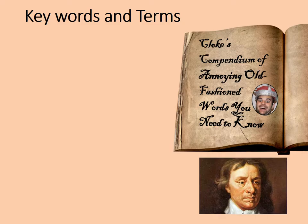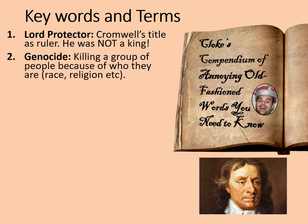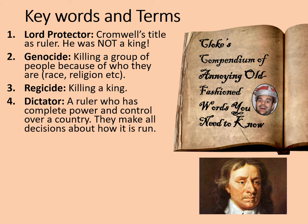Let's have a look at some key words and terms. First: Lord Protector — Cromwell's title as ruler; he was not a king, even though he was at one point offered the crown. Second: Genocide — the killing of a group of people because of who they are, for example for their race or their religion. Third: Regicide — killing a king. Fourth: Dictator — a ruler who has complete power and control over a country, making all the decisions about how it is run. Probably the most famous historical example would be Adolf Hitler, although there are plenty of others too.